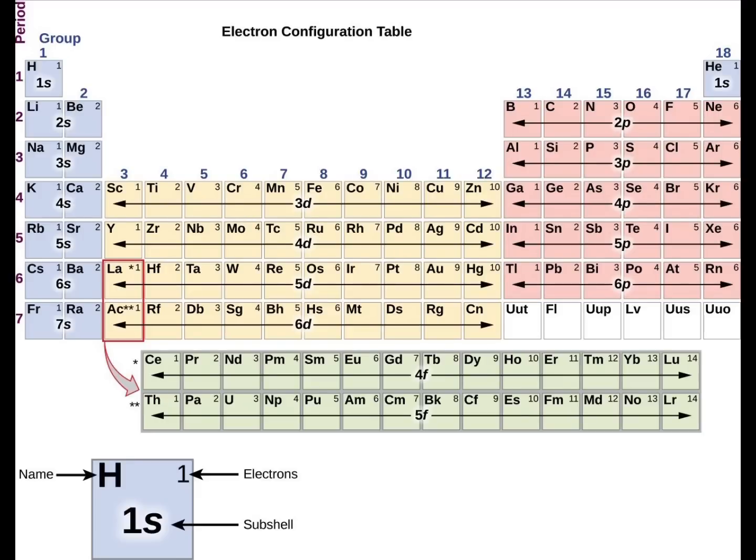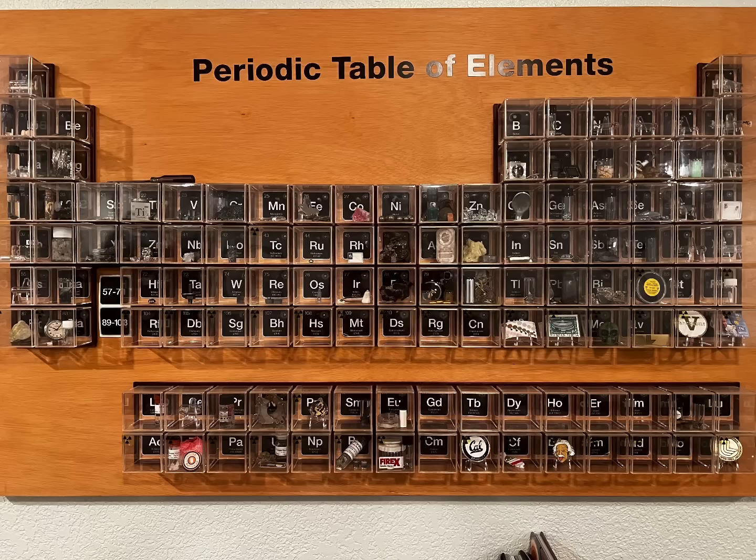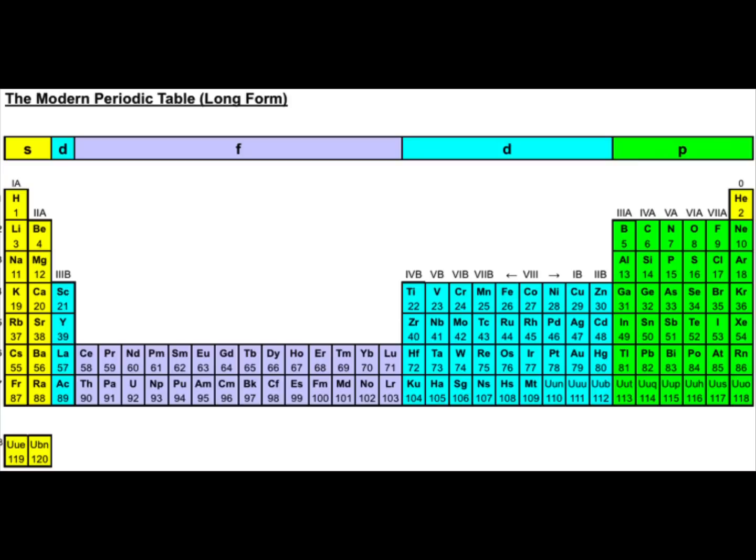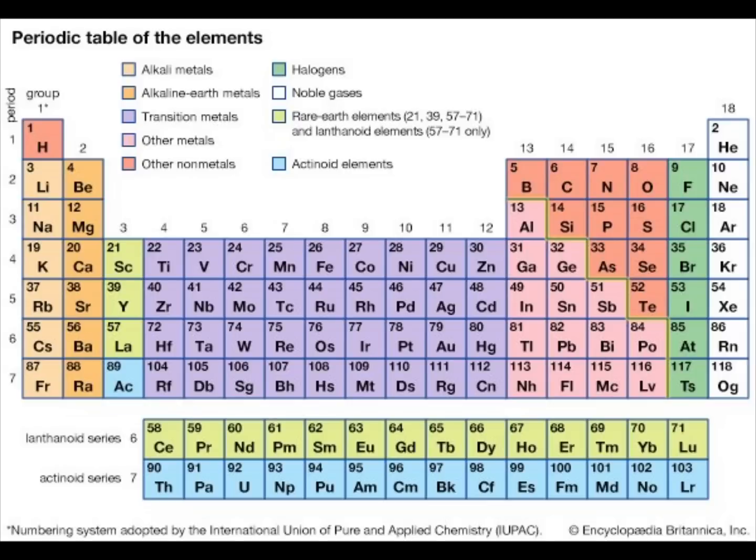The most common question about the periodic table is why there are two rows just hanging out by themselves at the bottom. If you look closely, right next to barium, there are the numbers 57 to 71. And next to radium, there are the numbers 89 to 103. This is where those rows belong, and it made sense to condense the table by placing them below. The top row is the lanthanoids, who are known as the rare earth elements. And the bottom row is the actinides, who are all radioactive.